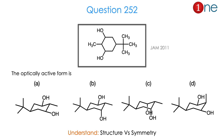Let us look at the next question. They given a cyclohexene with many attachments: two hydroxy groups, a methyl group, and one tertiary butyl group. They ask you to find the optically active form. They given four different structures. The structures mostly have the tertiary butyl group locked; they only differ in the orientation of the hydroxy and methyl groups — whether they are axial or equatorial relative to each other. They ask you to find the optical activity among these four possibilities. The question is really about structure versus symmetry. The answer is B. Let us see how.